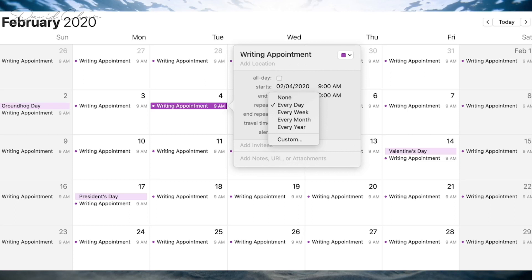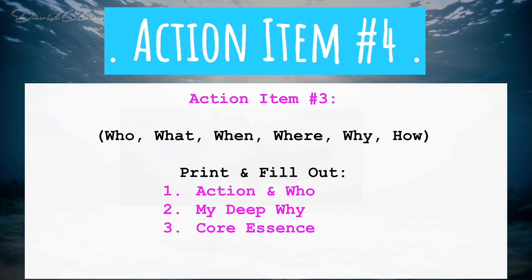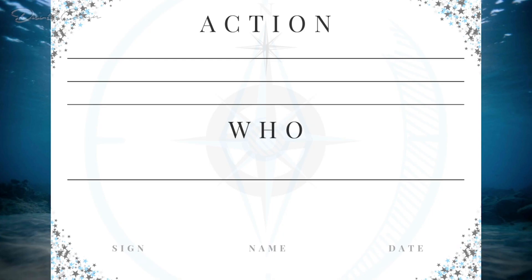Action item four: print and fill out the following items. We're going to tackle your one thing from as many angles as possible. The first printout covers action and who; the second is the deep why; the third is your core essence. These should come from an emotional place. For the action part, fill in: 'For this time period, I will [behavior] at [time] in [location].' For example: 'For the rest of 2019, I will write 20 minutes a day at 9 AM at the Starbucks across from my apartment.'